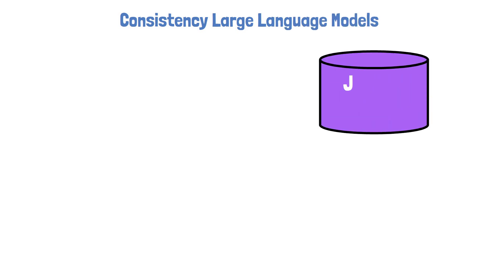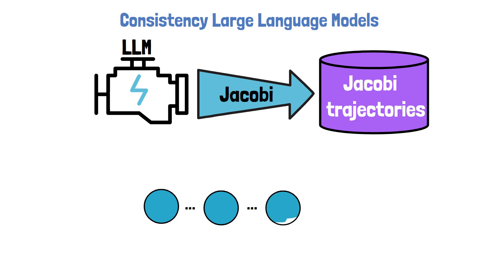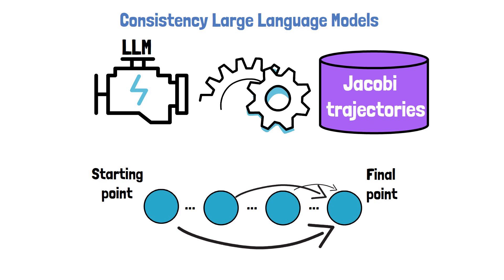The first step is to create a dataset of Jacobi trajectories. We do that by taking a pre-trained LLM and run Jacobi decoding as we've seen earlier over as many prompts as we want. Now that we have such a dataset, we look at a Jacobi trajectory for example, and similar to consistency models for diffusion models, here as well we train the model to yield the final point in the Jacobi trajectory from each of the intermediate points. Which model do we train? The same LLM that we've used to create the Jacobi trajectories dataset.